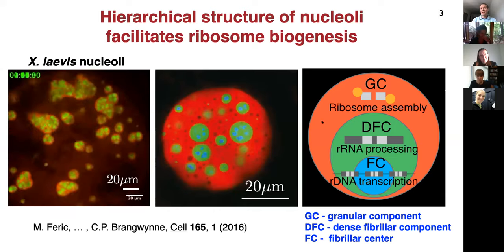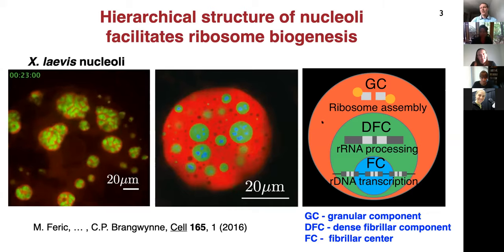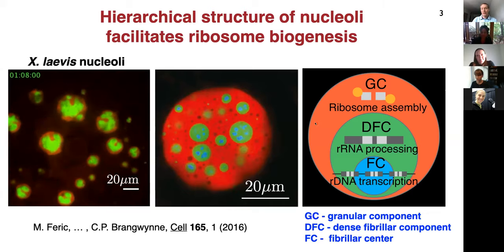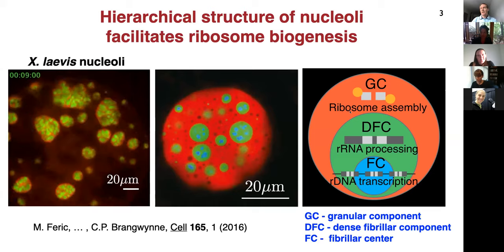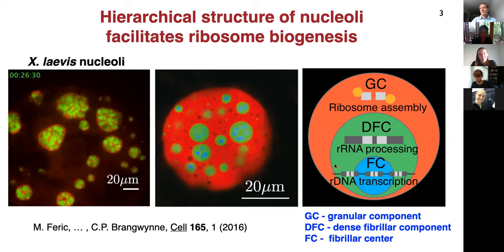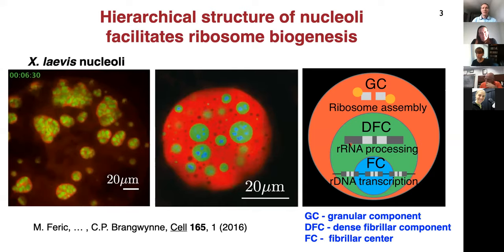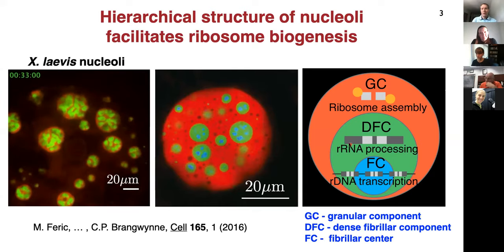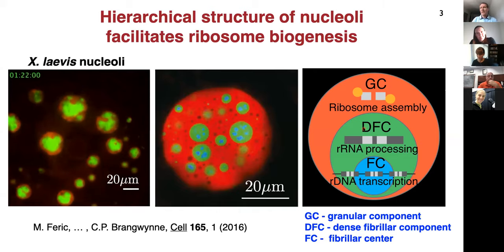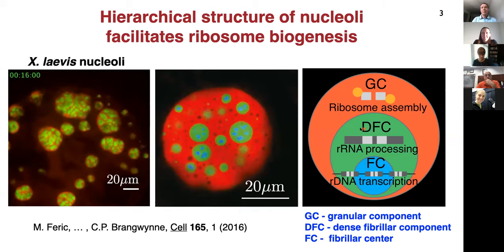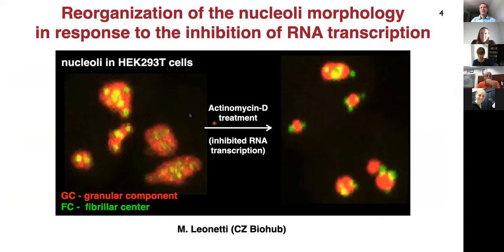Basically, this structure of nucleoli facilitates the production of ribosomes and is very important. In many other condensates, their structure is also connected to their function. Interestingly, lots of these structures are not static but dynamic. There are many examples where these condensates dynamically form or break apart during different cell cycles, and if you use different drugs, you can also affect their structures.